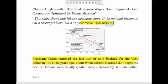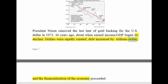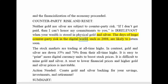Since 1971, when President Nixon removed the last hint of gold backing for the US dollar — about when earned income as a share of GDP began its decline — dollars were rapidly created, debt increased by trillions, and the financialization of the economy proceeded. Neither gold nor silver are subject to counterparty risk. 'If I don't get paid, then I can't honor my commitments to you' is irrelevant when your wealth is stored in physical gold and silver. The days of huge counterparty risk in the digital world, such as 2008, are likely to return soon.